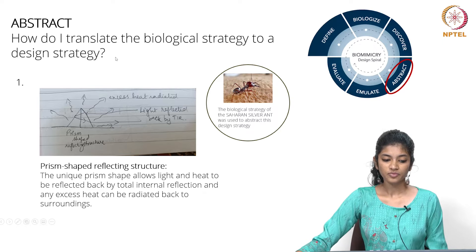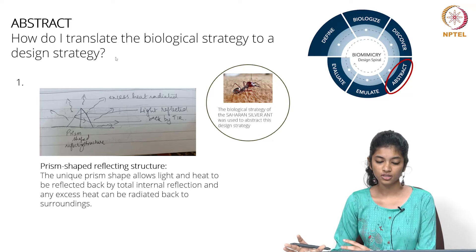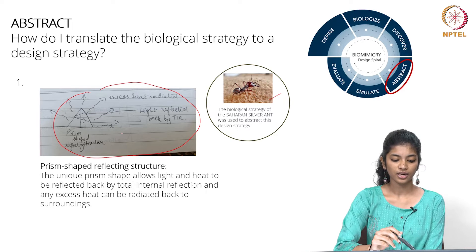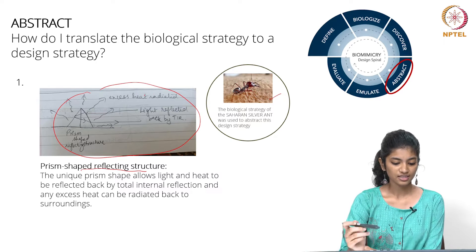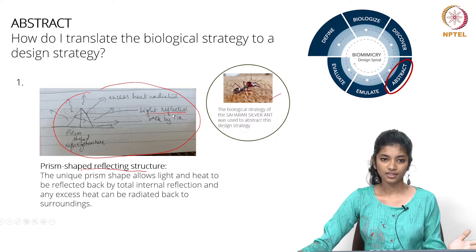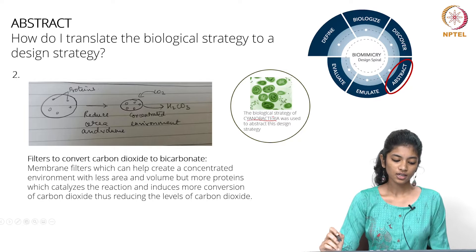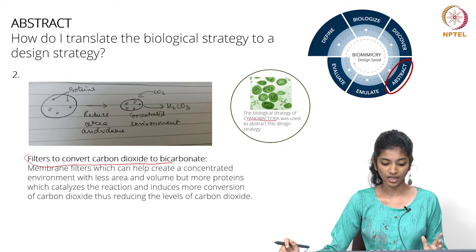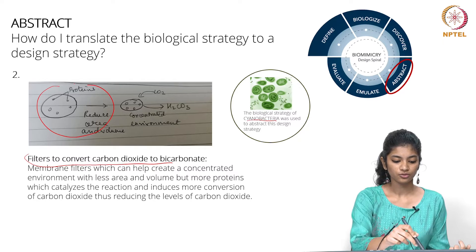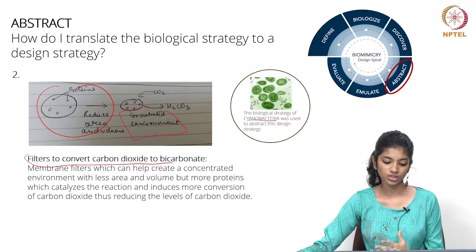The next step is abstract — how do I translate this biological strategy into a design strategy by removing all biological components? From the Saharan silver ant, I derived a design strategy using prism-shaped reflecting structures by which excess heat is radiated and light is reflected back through total internal reflection, thus reducing the heat absorbed. From cyanobacteria, I came up with the idea of using filters to convert carbon dioxide to bicarbonate, using micro-compartments to reduce carbon dioxide and convert it into a useful compound.